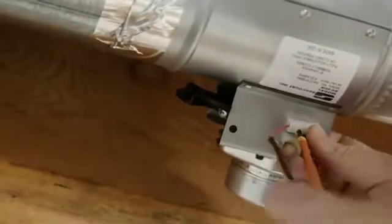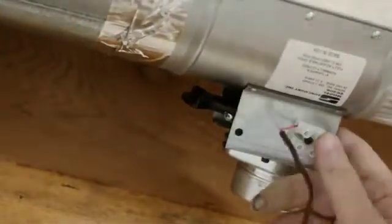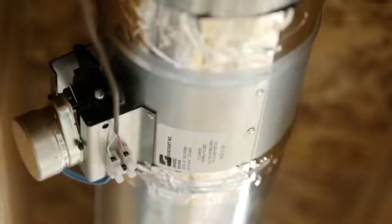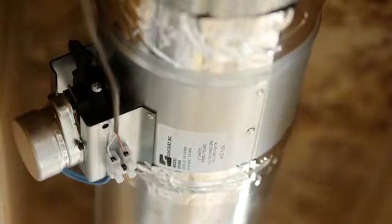Secure the wiring to the unit and the supplied transformer. Complete the installation by securing the damper with the supplied mounting screws and cover the seams in the duct with a good quality aluminum foil duct tape.